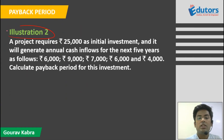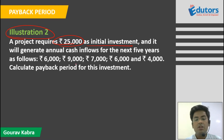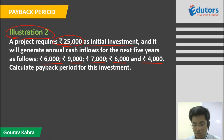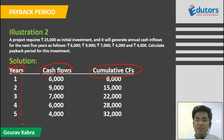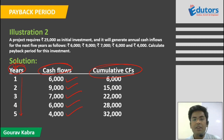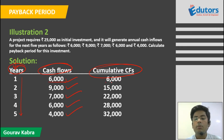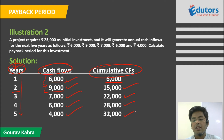In the second illustration, a project again requires rupees 25,000 but this time the cash inflows are not constant — there are 5 different cash flows over 5 years. We plot the years in the first column, cash flows in the second, and cumulative cash flows in the third. The cumulative totals are: year 1 — 6,000; year 2 — 15,000; year 3 — 22,000; year 4 — 28,000; year 5 — 32,000.